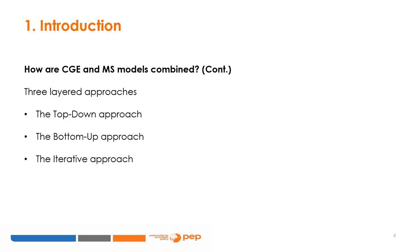There are three types of layered CGE-MS approaches: the top-down approach, the bottom-up approach, and the iterative approach. In the top-down approach, the CGE model simulates the effects of the policy changes at the macro level and passes the results to the MS model. In the bottom-up approach, the MS model simulates the effects of the policy changes at the micro level and passes the results to the CGE model. In the iterative approach, shocks are transmitted from one model to the other until the two models converge.